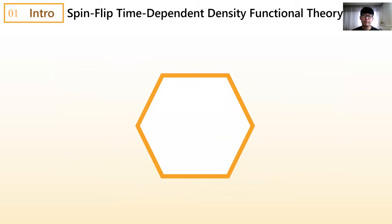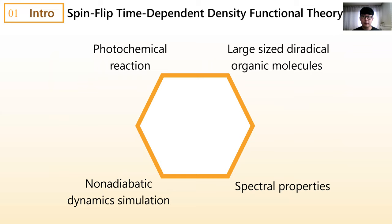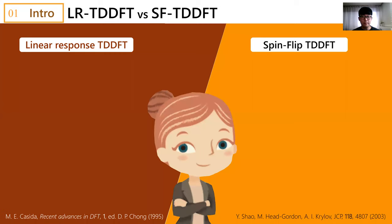In my PhD studies, we were interested in investigating photochemical reactions of relatively large-sized diradical quinone-methides. Especially we wanted to understand these reactions by excited state dynamic simulations with comparison of spectral properties obtained by the simulations and by time-resolved experiments in this field. For this purpose, one of the most appealing electronic structure methods was spin-flip TDDFT.